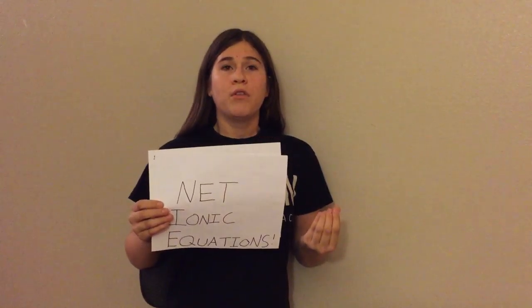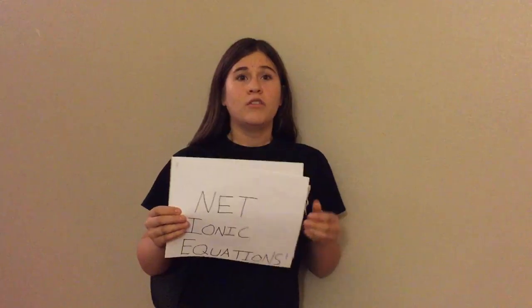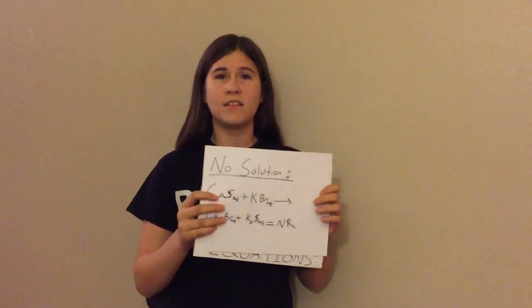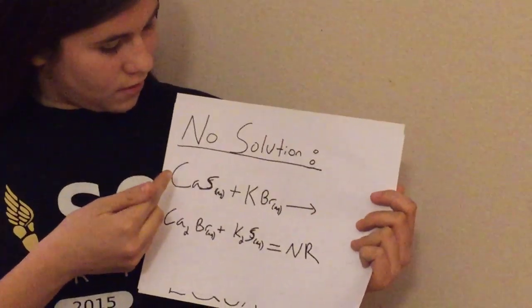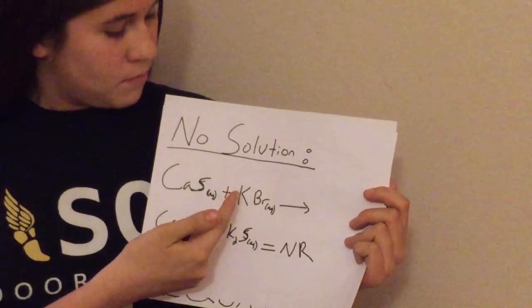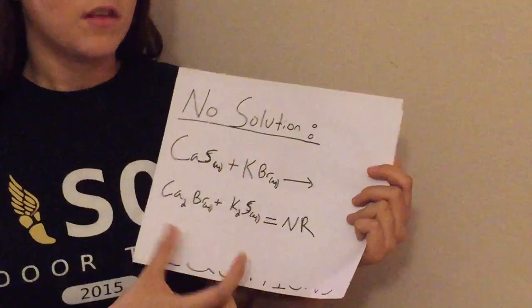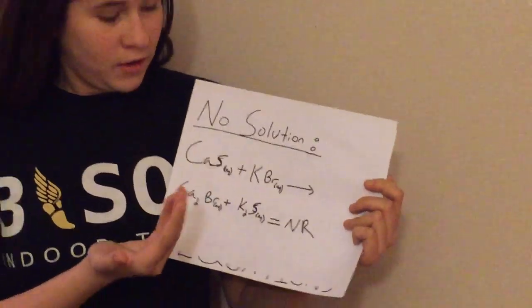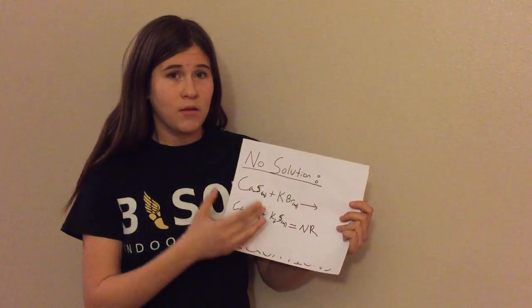If both of the compounds are aqueous, then it's no solution. For my first problem, we can clearly see that it's no solution because both are aqueous. This is calcium sulfide and potassium bromide, which are both aqueous — bromide is a halogen and potassium is an alkali metal, so when they react they remain aqueous.